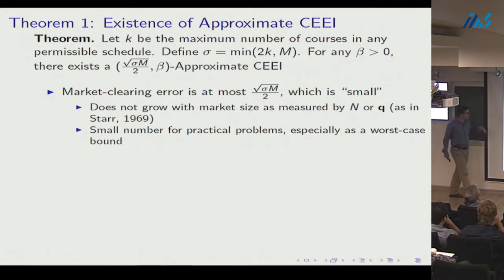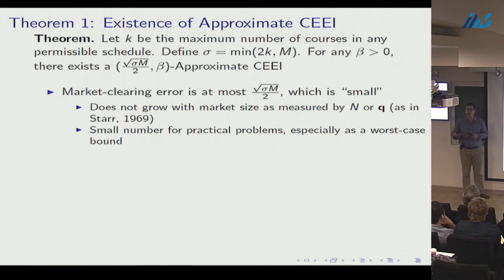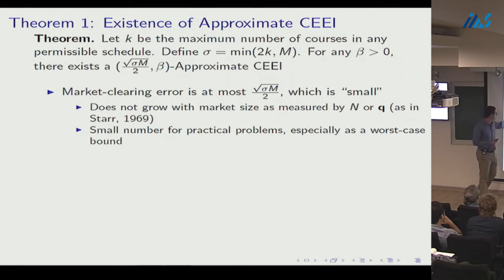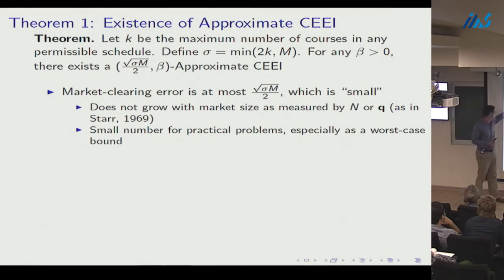The market clearing error is at most root(sigma * m / 2), which is small in two senses. First, it doesn't grow with n (the number of students) or q (the capacity vector) — as we scale the market, the worst-case bound doesn't similarly grow. This relates my result to a famous result for general equilibrium existence with continuous but non-convex preferences.